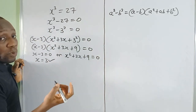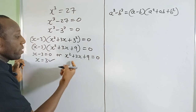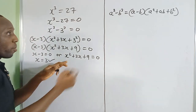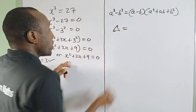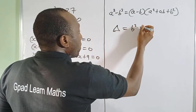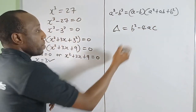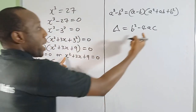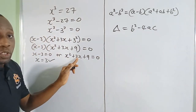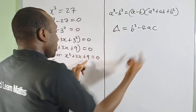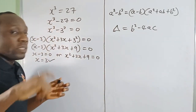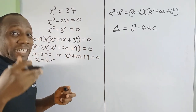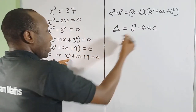Now let's test the type of roots that x² + 3x + 9 = 0 has — whether they are real, imaginary, or equal — using the discriminant. The discriminant is b² − 4ac. If it equals zero, we have equal roots; if greater than zero, real roots; if less than zero, imaginary roots.